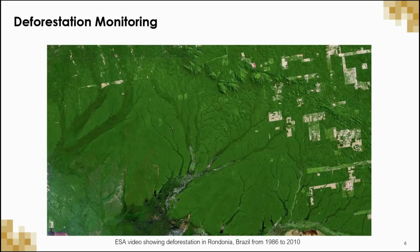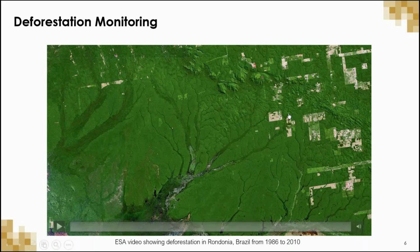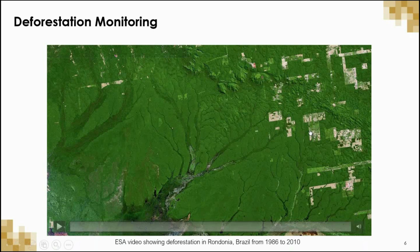Now I'm going to show seven examples of the use of space-based Earth Observation and other remote sensing technologies to support different applications. This first one is a video from the European Space Agency of Earth Observation data used to monitor the trajectory of deforestation in Rondonia, Brazil between 1986 and 2010. In the east of this image, one can already see the deforestation that has occurred — these lighter-colored tan and green rectangles. Much of the deforestation in this area is for industrial-scale agriculture, particularly cattle ranching and soybean farming.